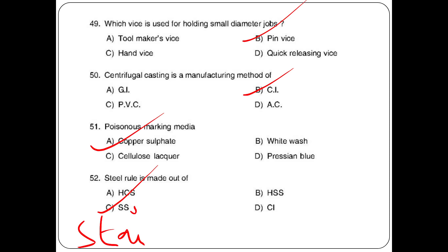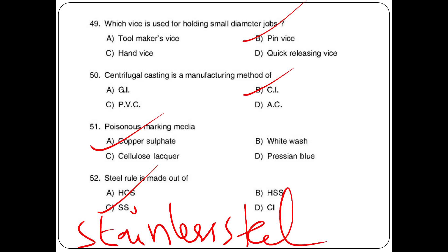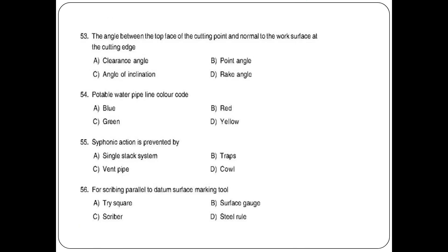The angle between the top face of the cutting point and normal to the work surface at the cutting edge is called — options: point angle, angle of inclination, rake angle. The answer is option C: rake angle. Potable water pipeline color — options: blue, green, red, yellow. The answer is option C: green.